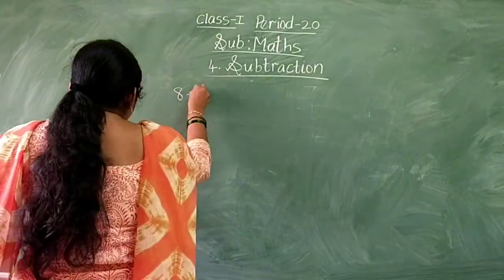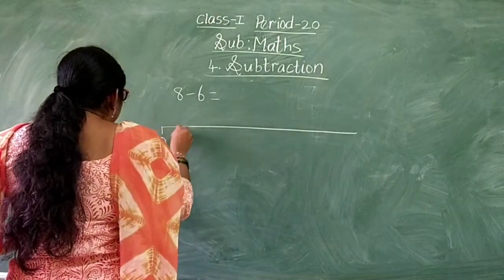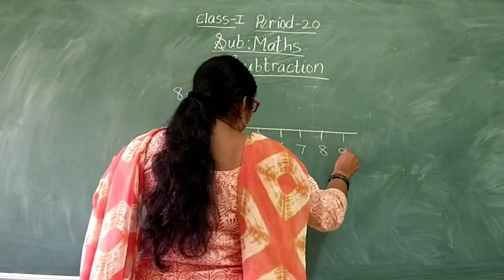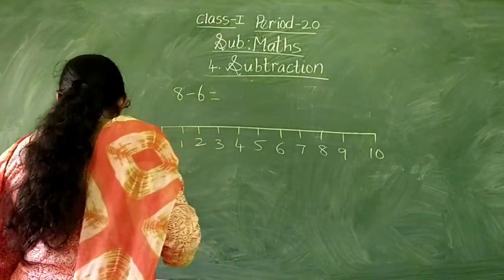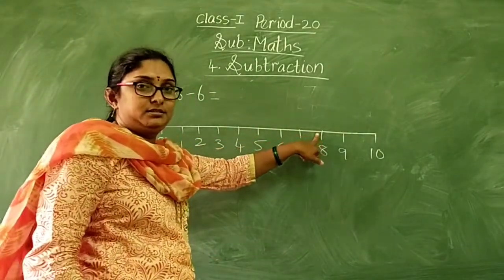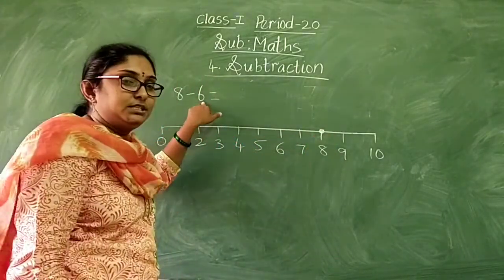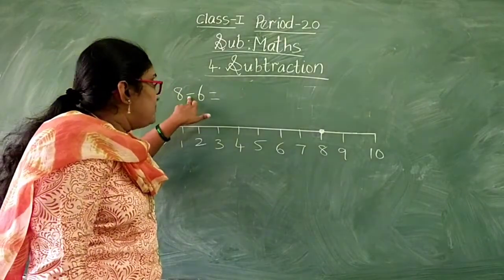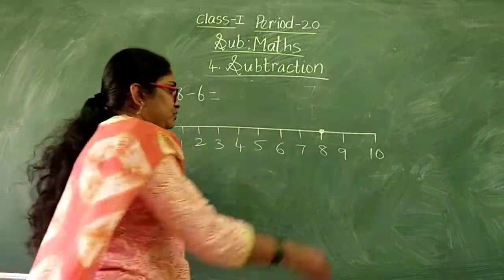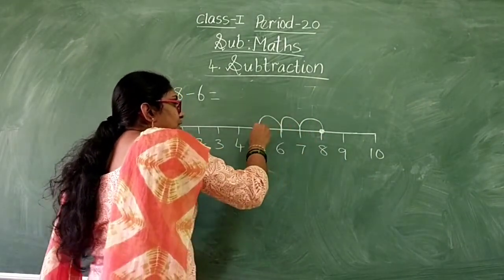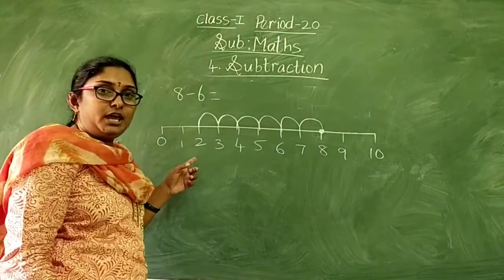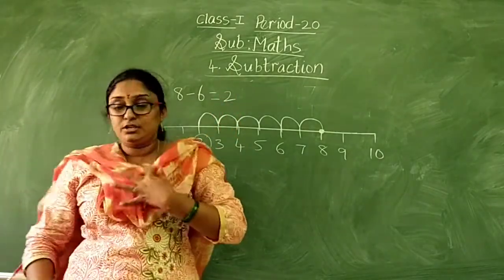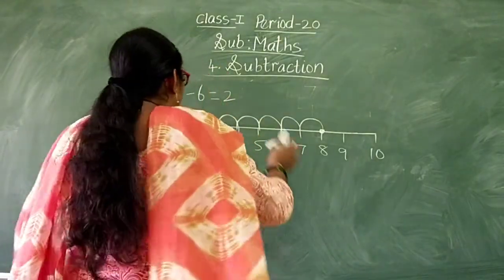Page 46: subtraction by using the number line. Remember that subtraction on the number line means you have to count backward. Here the first number is 8, so you start at 8. The second number is 6, so you make 6 jumps backward — because this is subtraction and we use the minus symbol. Counting back 6: 1, 2, 3, 4, 5, 6 — we get the answer 2. Number line subtraction means you count backward.